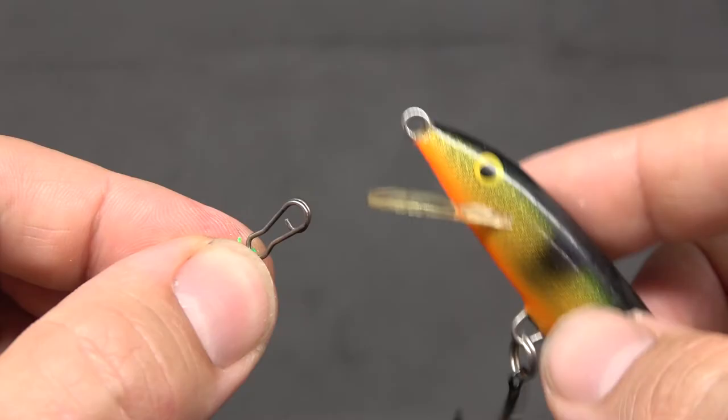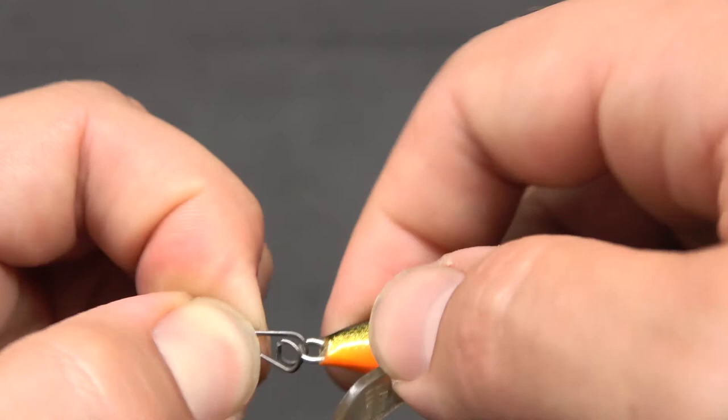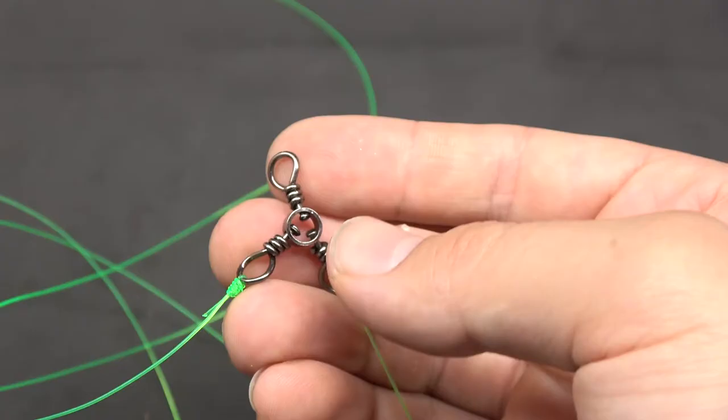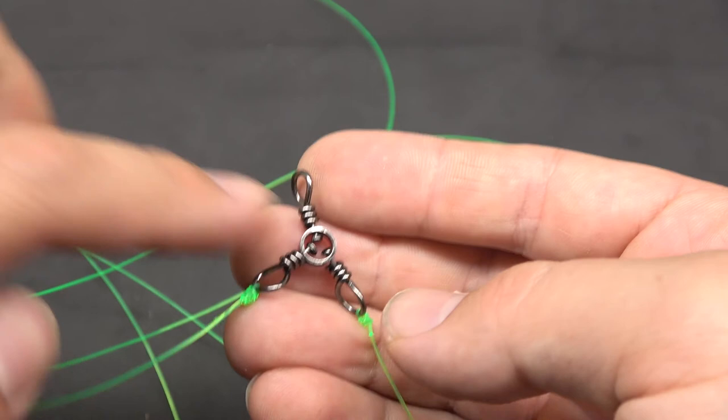And at this split ring is where you would attach your crankbait, like so. At this point, you should only have one ring remaining on your three-way swivel, and this gets attached to your main line on your rod.